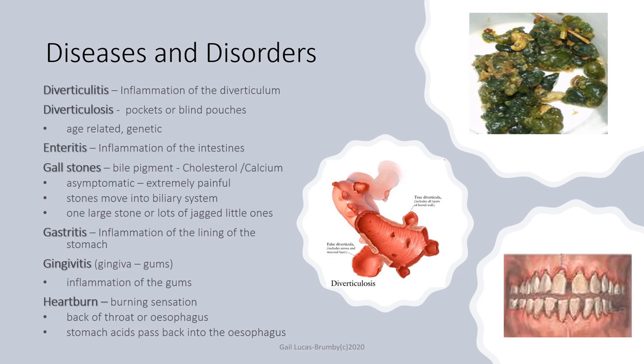Gallstones occur when the gallbladder absorbs too much water from the bile, causing some of it to solidify and form stones. They can be asymptomatic or very painful — they can be small and jagged or a single large stone filling the whole gallbladder. If stones move through the biliary system into the cystic duct or bile duct, this can be very painful. A large gallbladder stone can be treated with laser to break it into smaller pieces; small stones may require gallbladder removal, which is done through keyhole surgery these days.